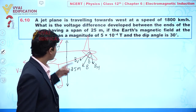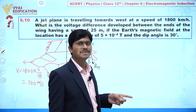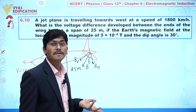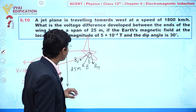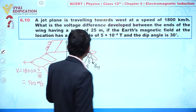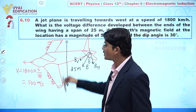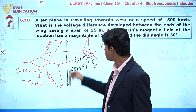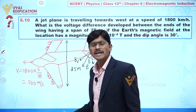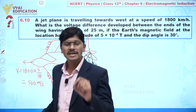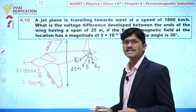The horizontal component is parallel to the wing length, so it will not be responsible for the induced EMF. However, the vertical component of Earth's magnetic field — acting downward — along with the length l and velocity v, are all perpendicular to each other.